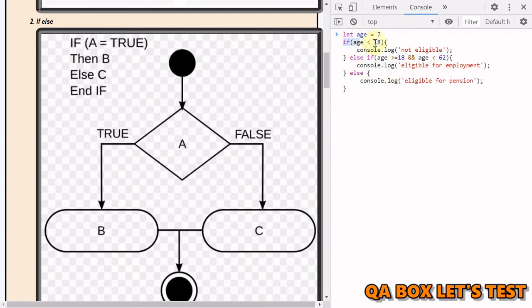The moment any of the condition is satisfied, your program execution comes out of this whole if-else loop. So therefore it is very important you write these conditions in a proper way, and I'll show you an example of what I just said. In this particular case, since the age is 7, which is less than 18, this particular code block will be executed and these would be skipped. All right, so not eligible, as you could see.